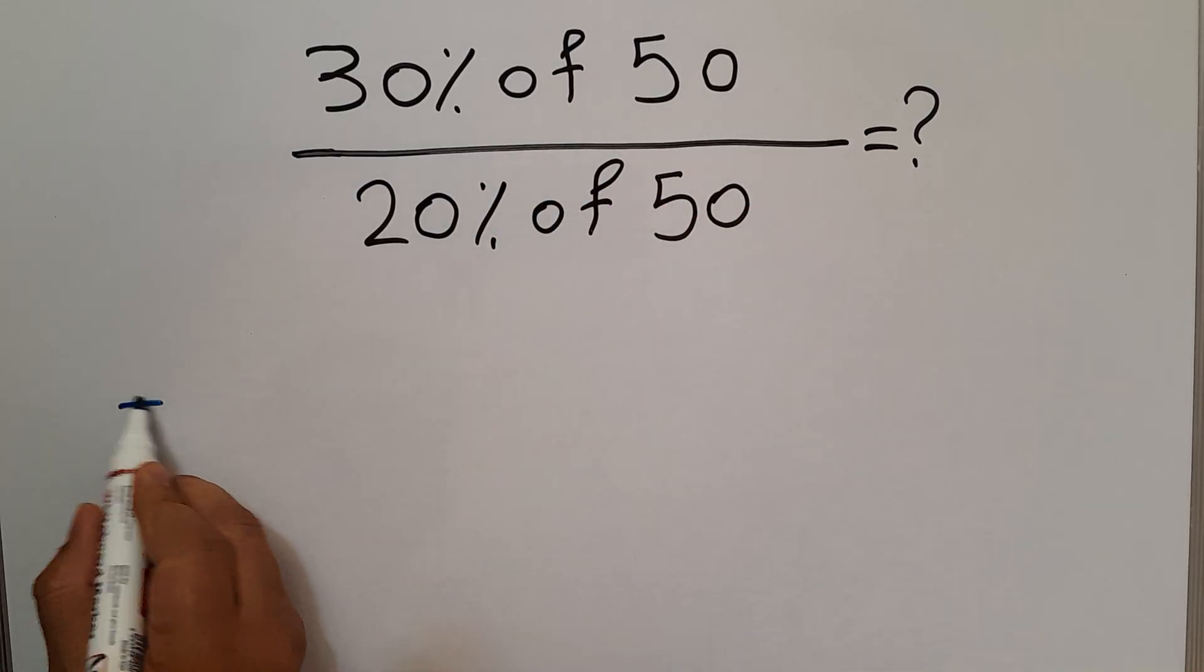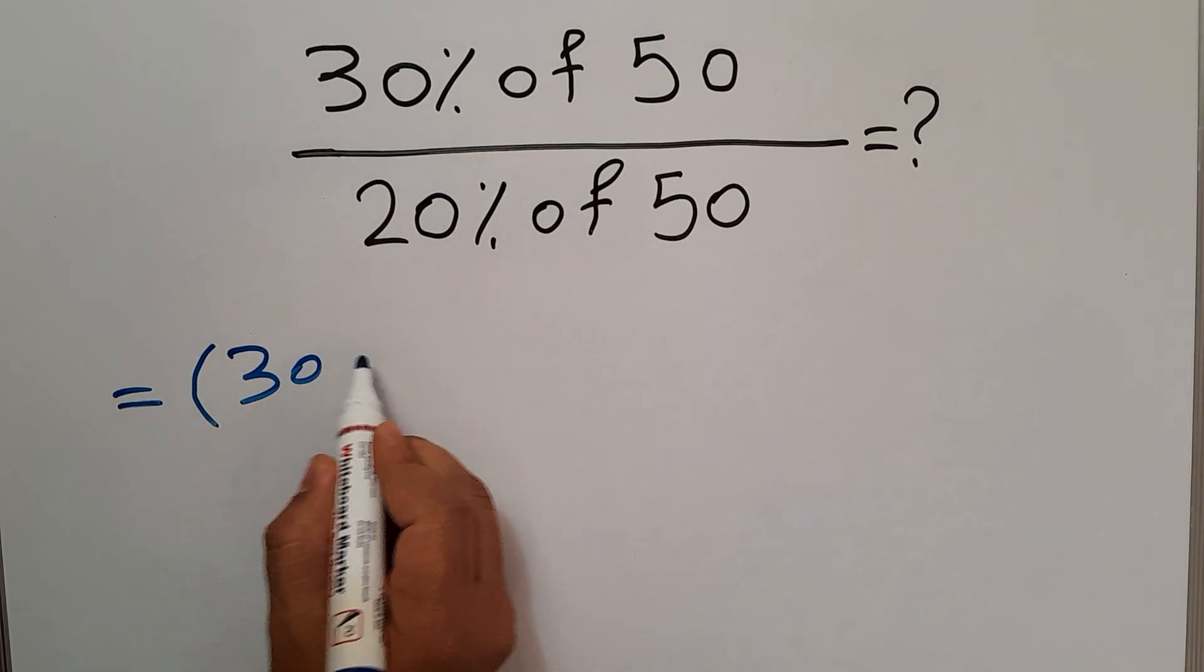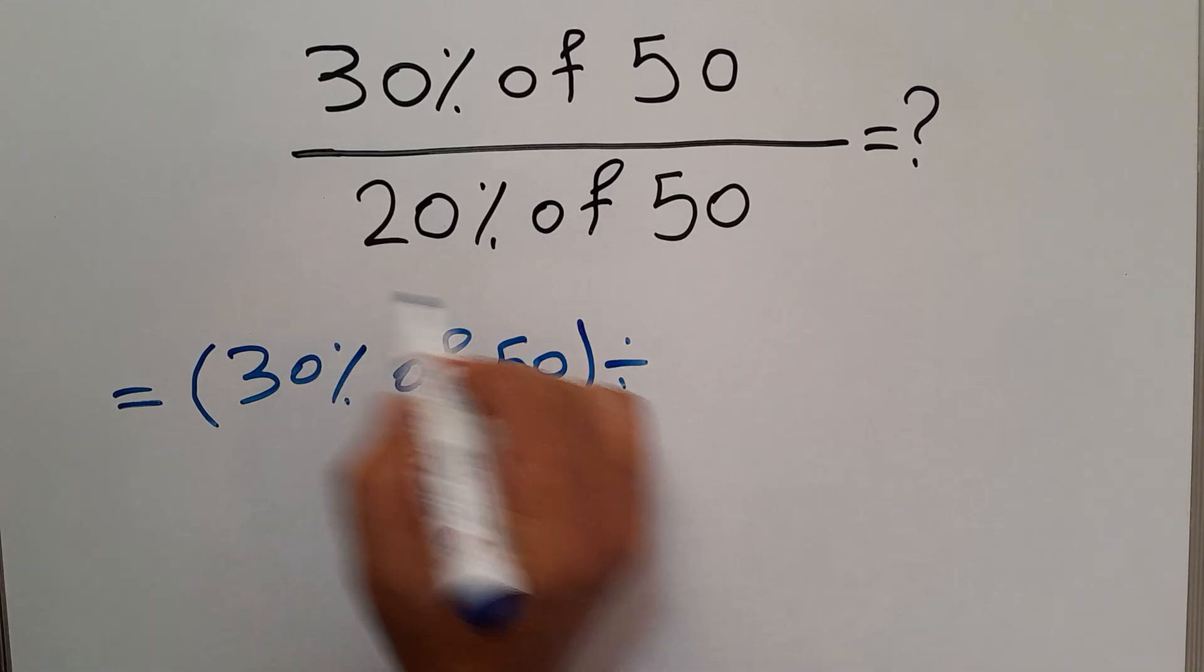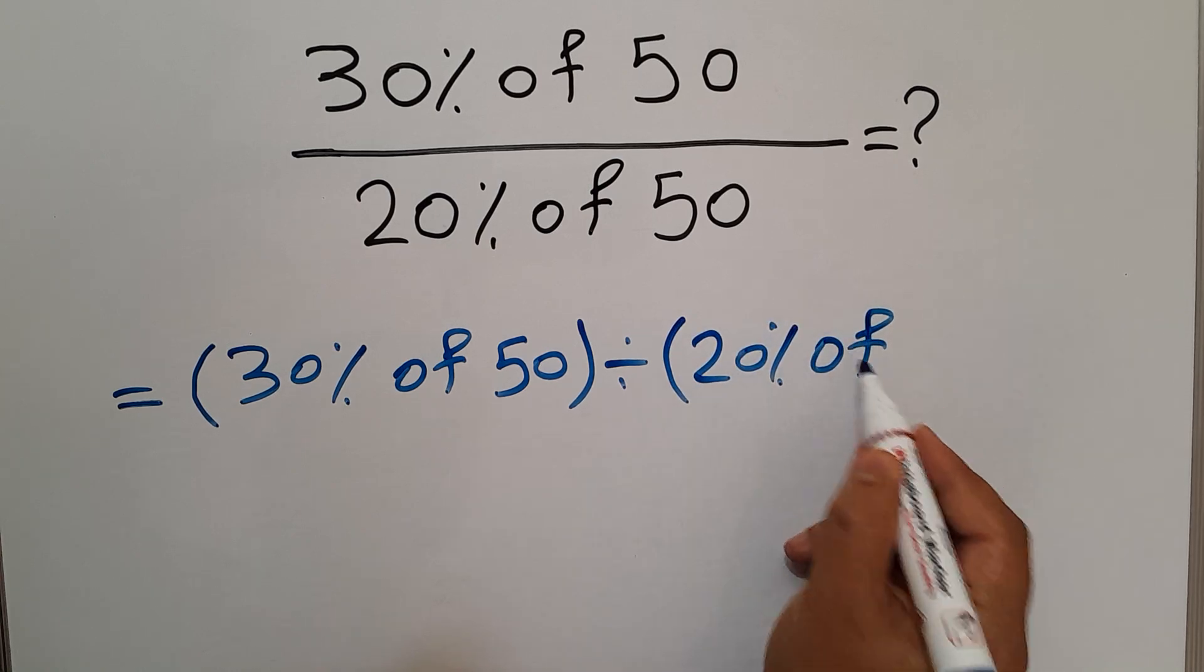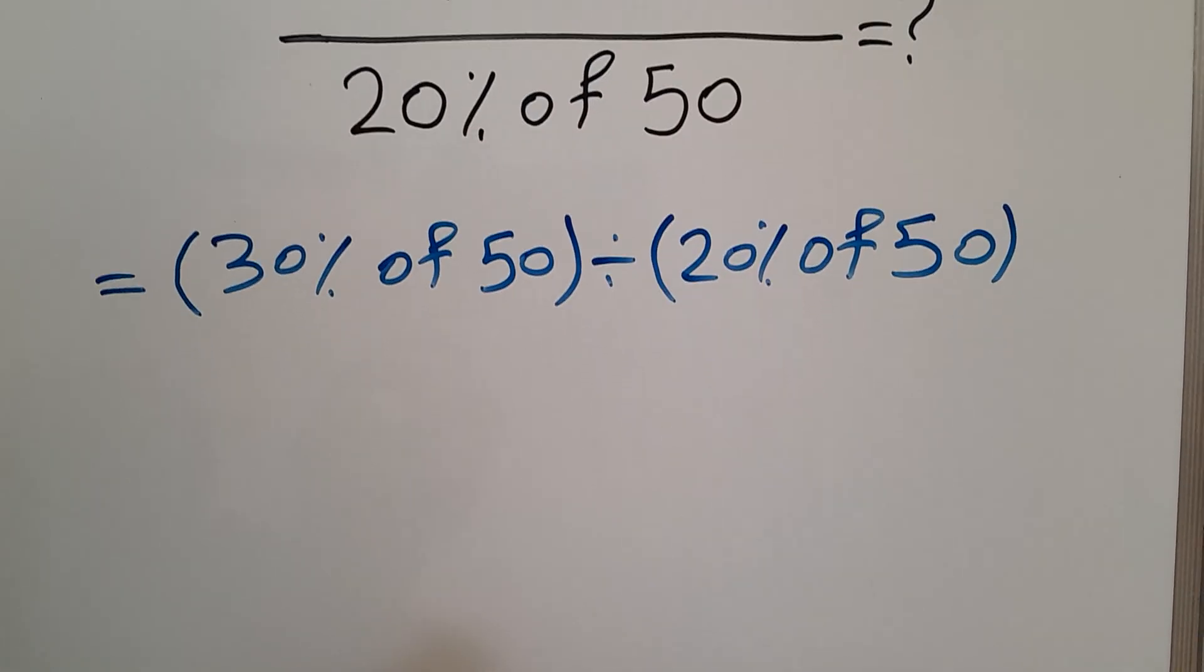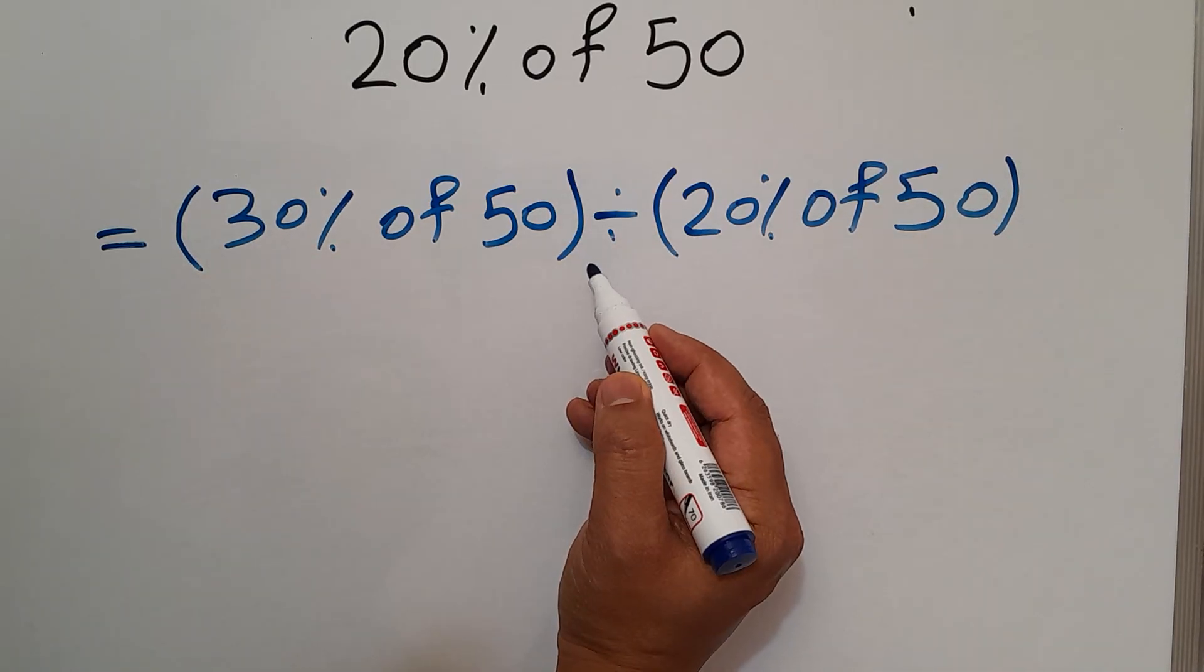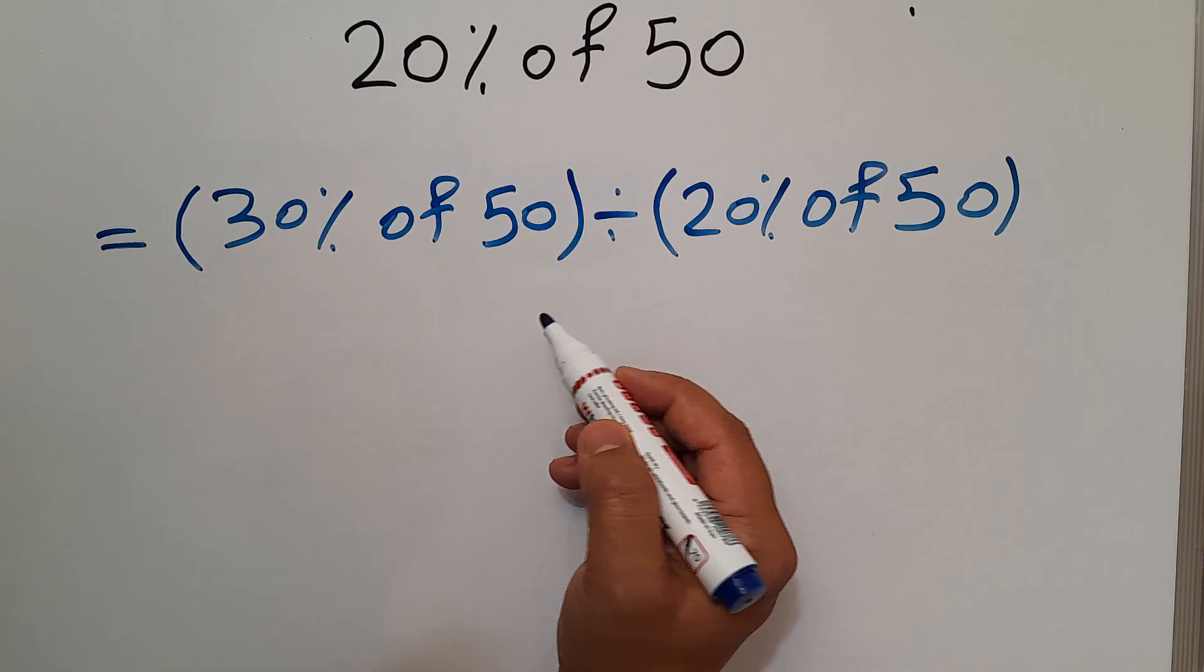Instead of this fraction we can write the numerator in parentheses: 30% of 50, divided by the denominator in parentheses: 20% of 50. Now in this expression we have two parentheses and one division. As we know, parentheses has higher priority than other operations.